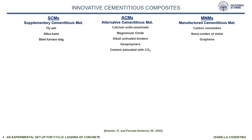Innovative cementitious composite materials are drawing considerable interest due to their substantially improved mechanical properties as compared to ordinary cement-based materials. They can be divided into three groups. The first is supplemental cementitious materials, for example fly ash, silica fume, and blast furnace slag.